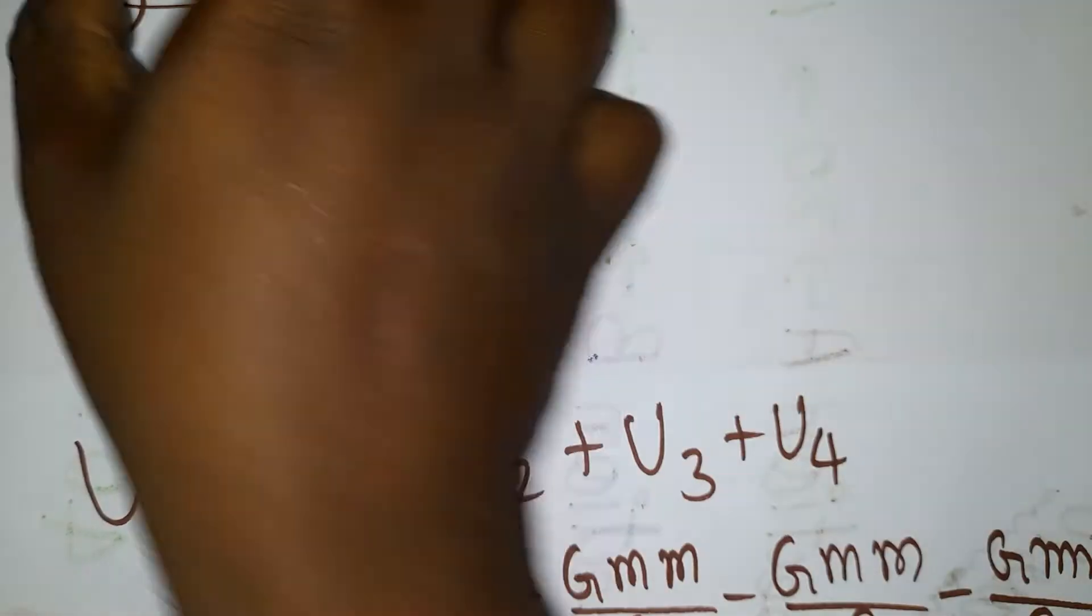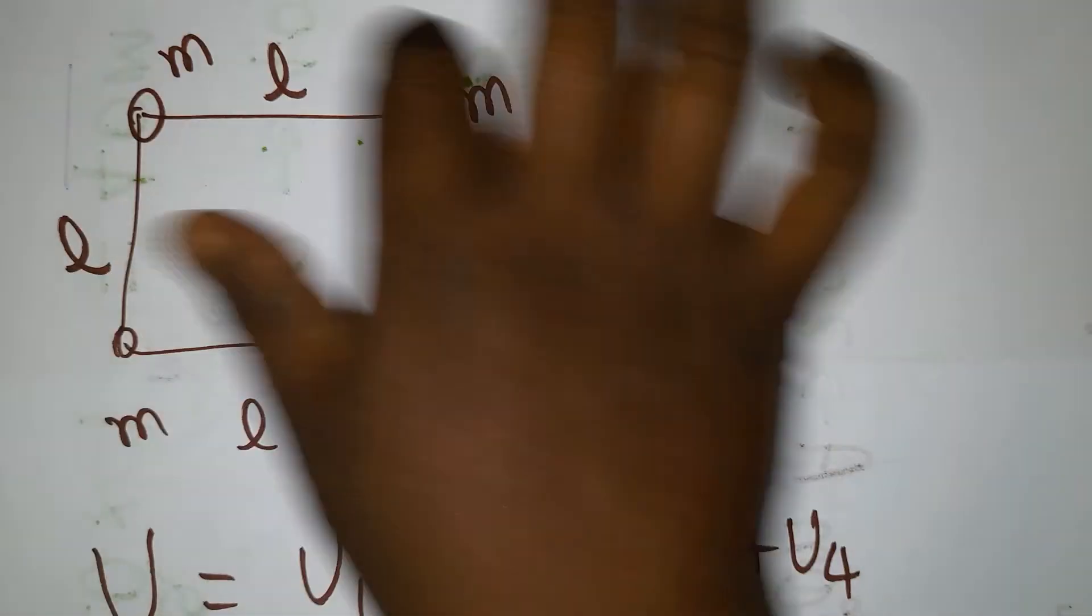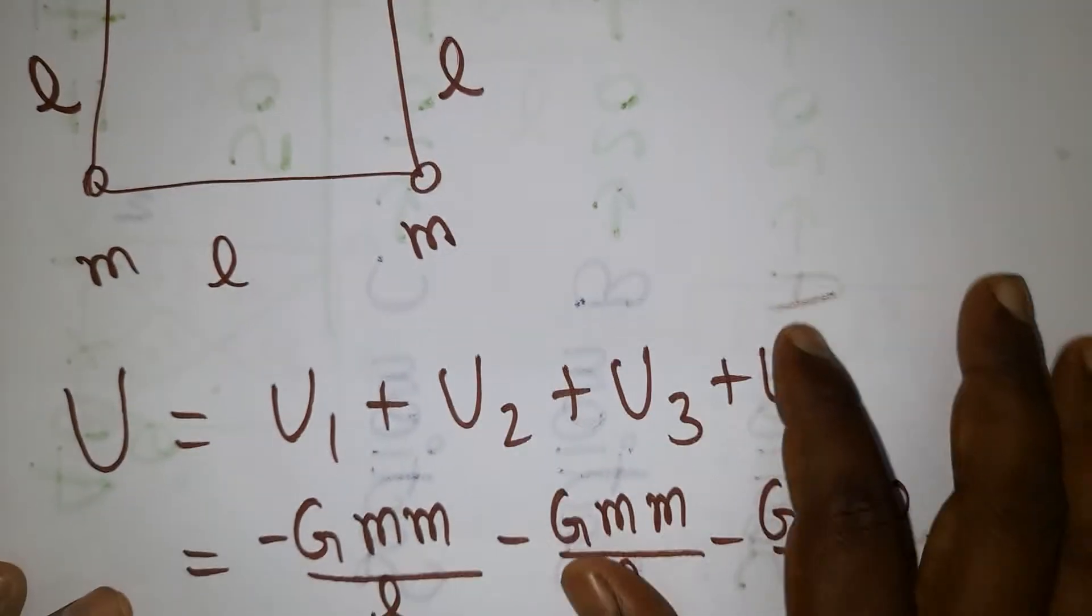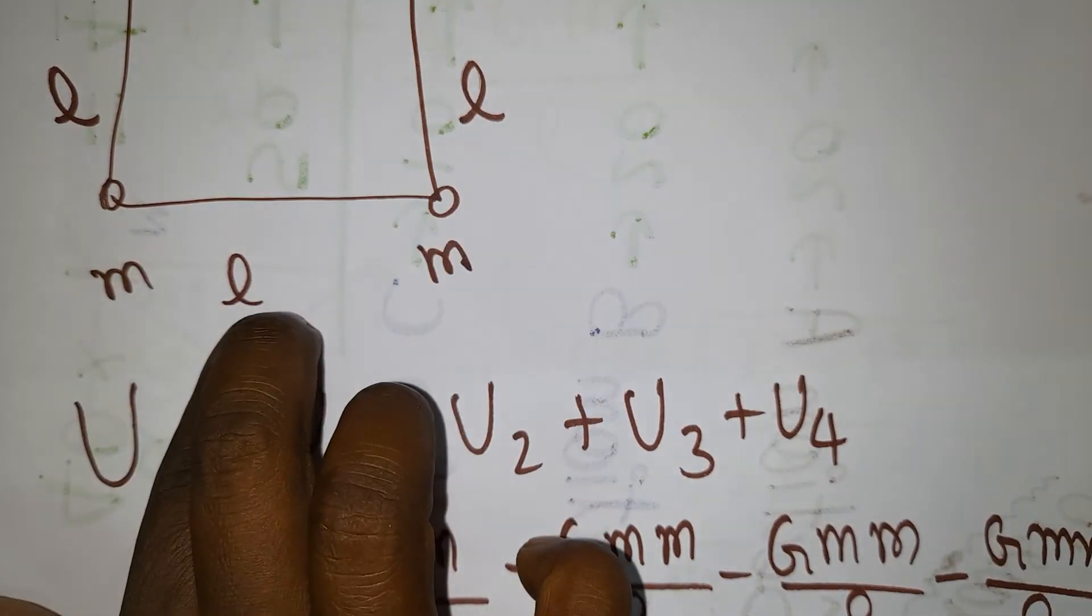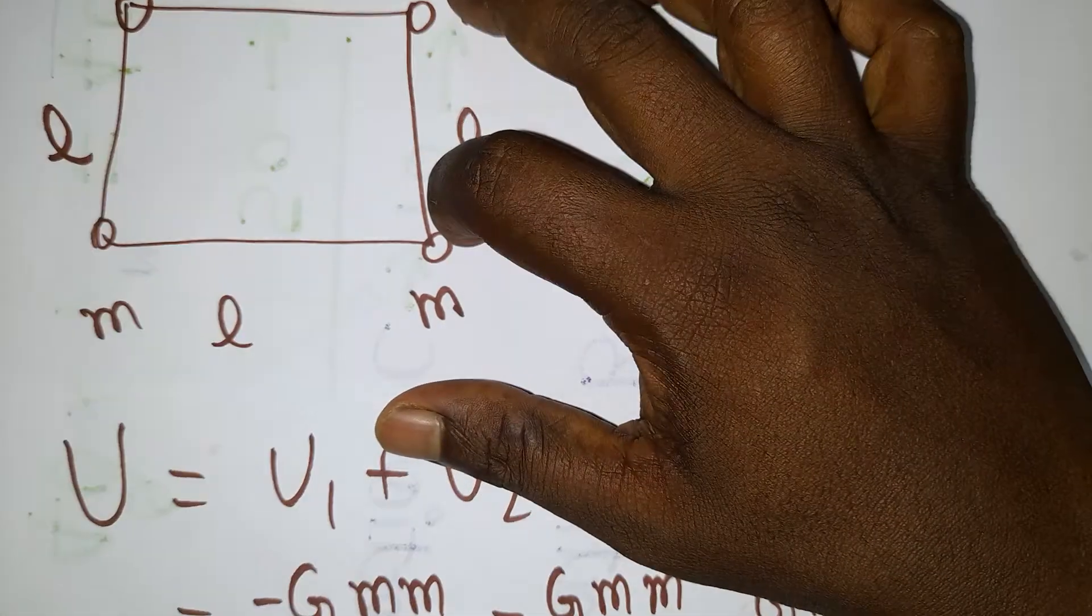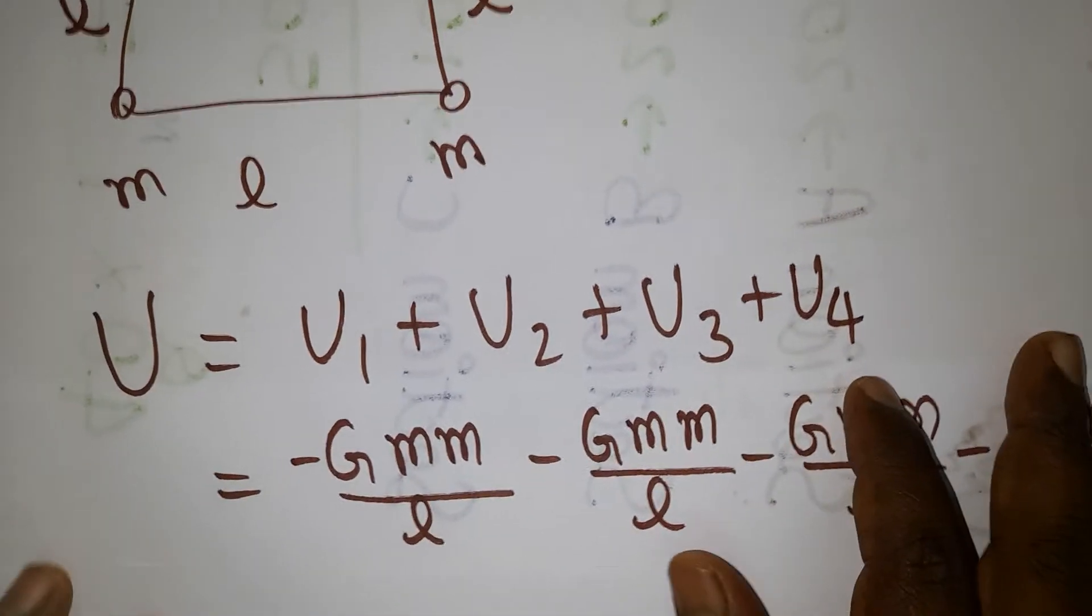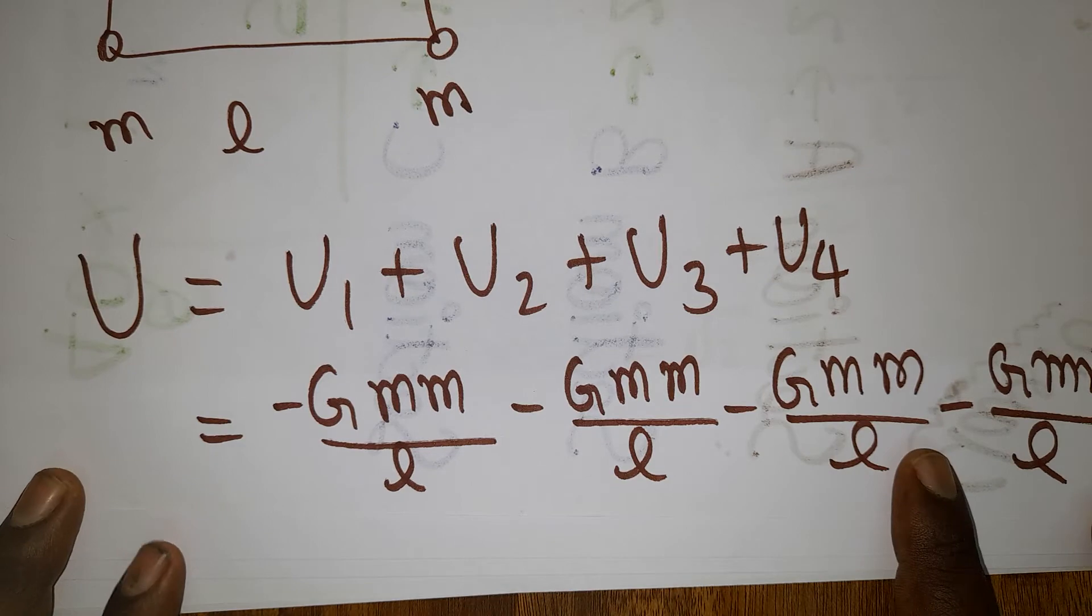There are u1, u2, u3, u4 - four energies required to arrange this system. u1 is G times m1 m2 over distance. Same for m1 m2 distance - if you write everything, all will become identical. So four times for the sides.